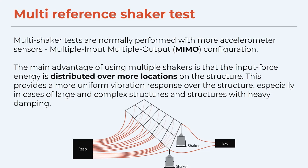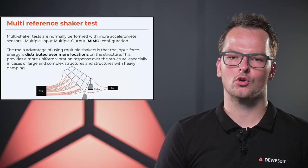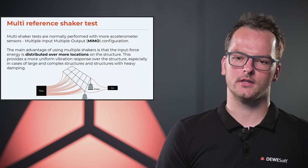Focusing on the multiple input multiple output configuration — for this kind of test we usually use more shakers to excite the structure and more accelerometers to cover the whole structure. The advantage of using multiple shakers is that the input force energy is distributed over more locations of the structure, which is especially helpful when we have large or complex structures and structures with heavy damping.